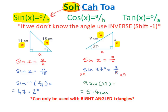We start these questions by labelling our triangle. For the triangle on the left, we have angle x that we're trying to find, and sides of 11 centimetres and 15 centimetres. We label the triangle h, a, and o. The hypotenuse is always the longest side, so 15 centimetres is labelled h. The opposite is always opposite the angle, so 11 centimetres is labelled o. The remaining side gets labelled a, the adjacent.